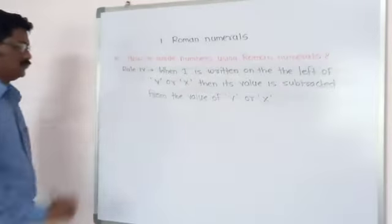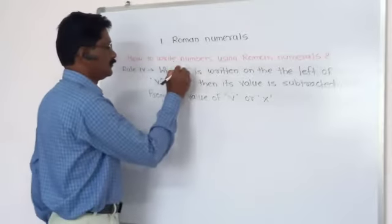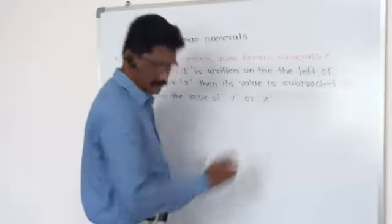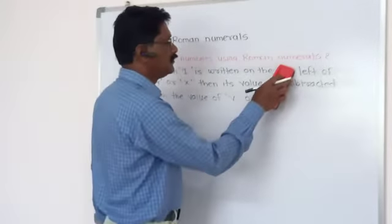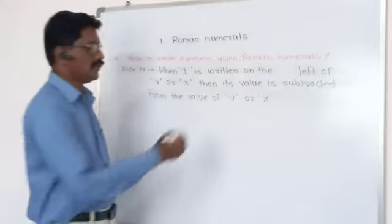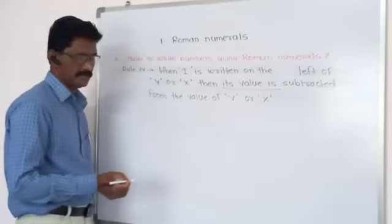This is our fourth rule. When I is written on the left of V or X, then its value is subtracted from the value of V or X.